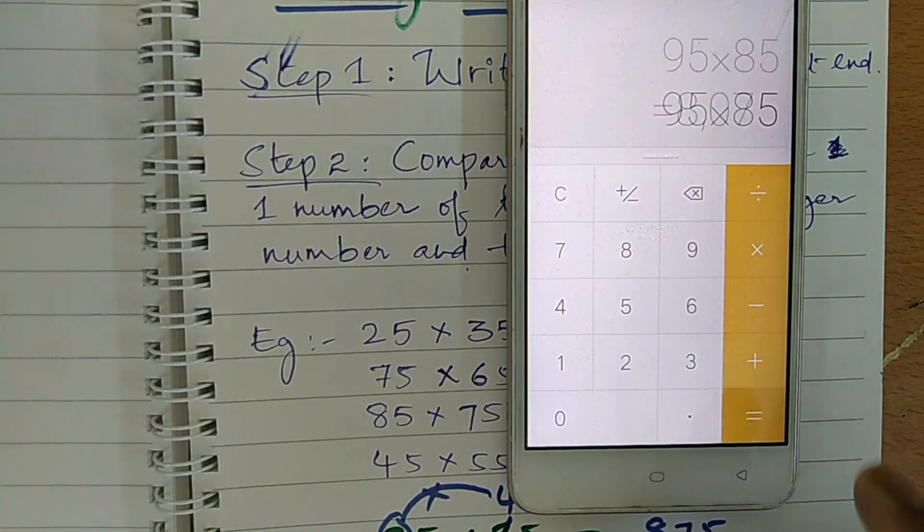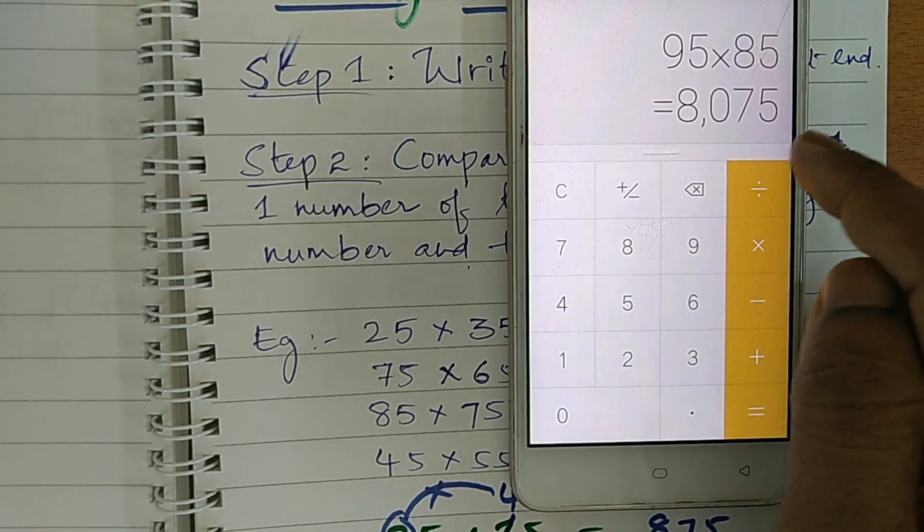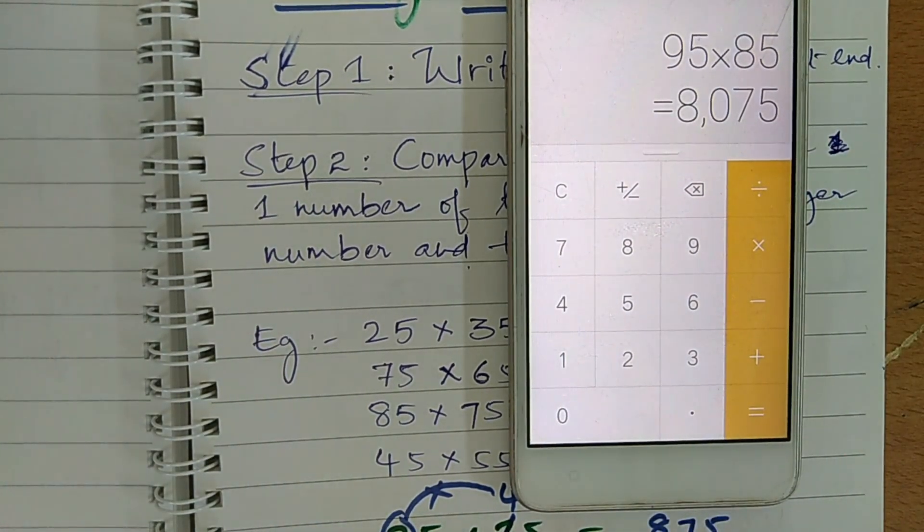Then, 95 into 85, again you see at the end here, 75 is there. So, if you see this type of numbers, every time 75 is repeating at the end. So, that's why I have taken 75 here in the first step.